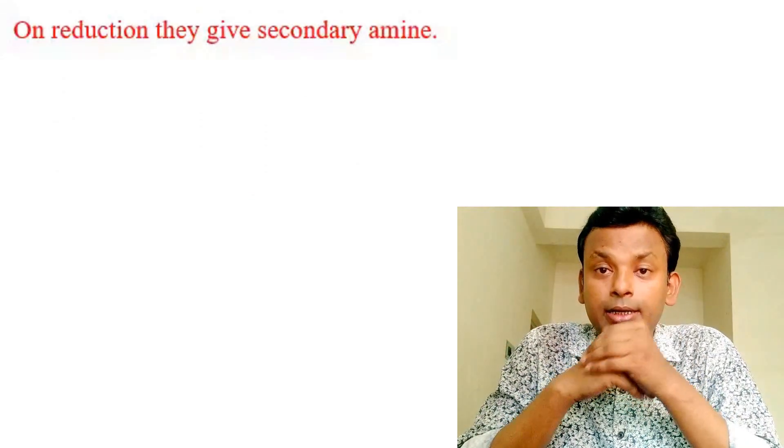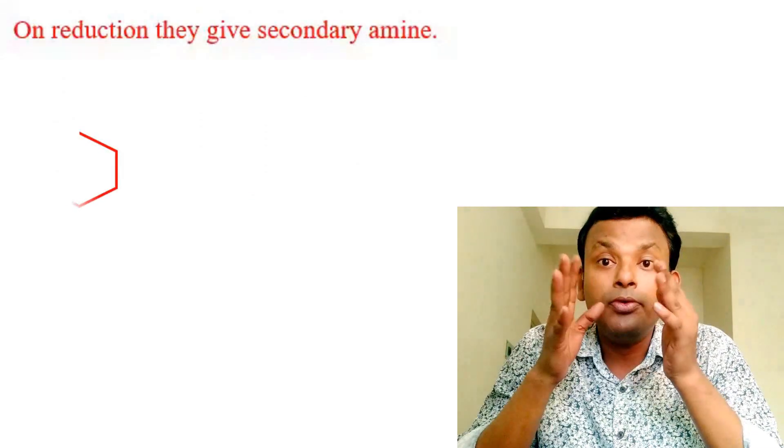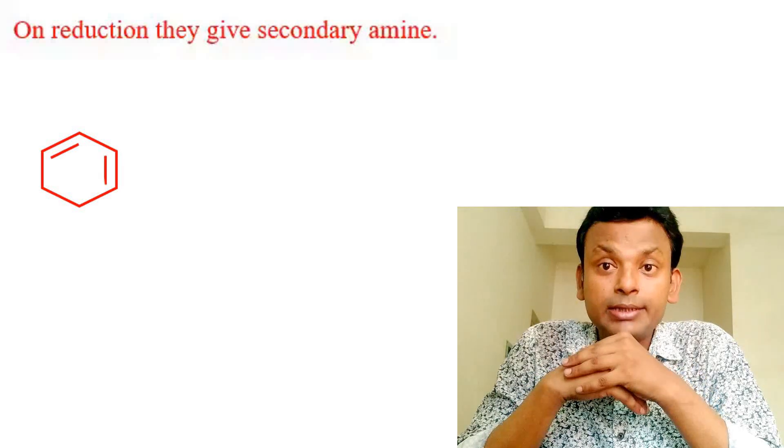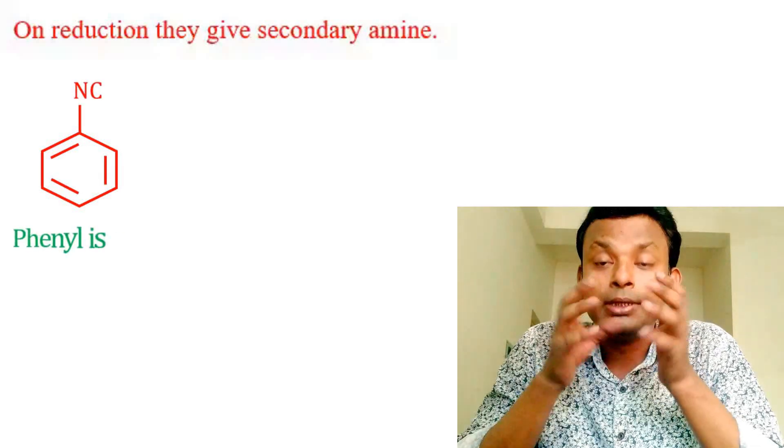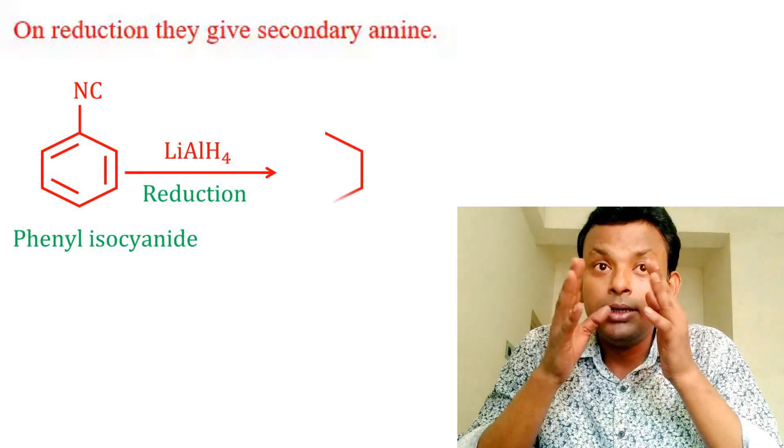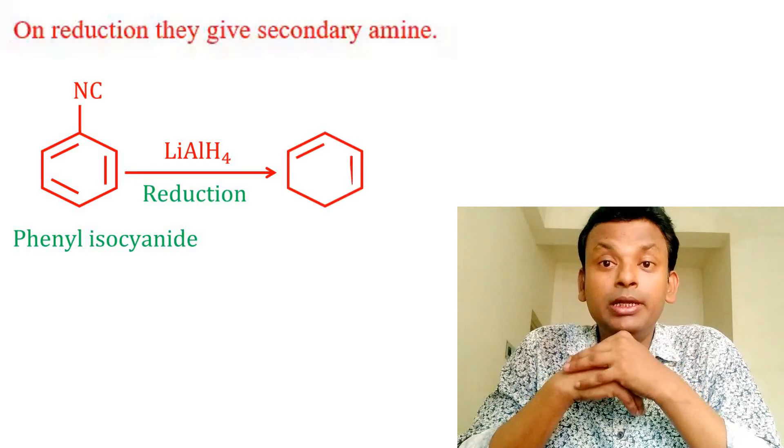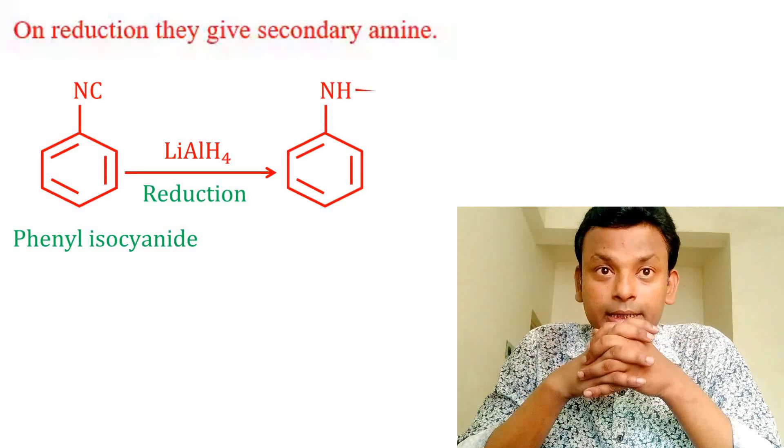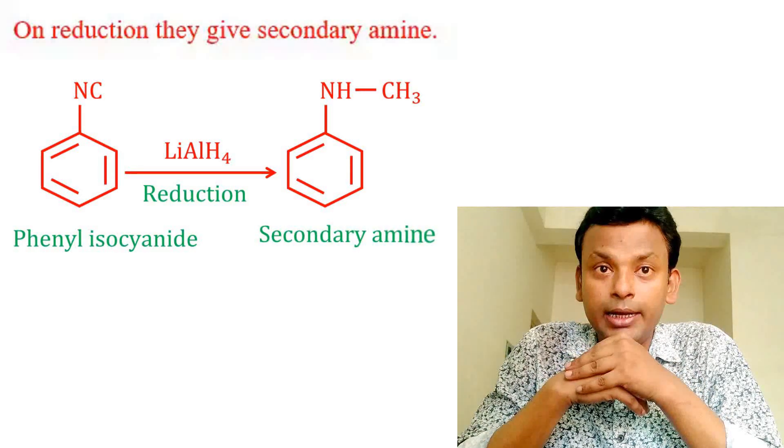On reduction, they give secondary amine. Reduction of isocyanide gives secondary amine. That is, phenyl isocyanide reacts with lithium aluminum hydride, that is the reducing agent, to form secondary amine.